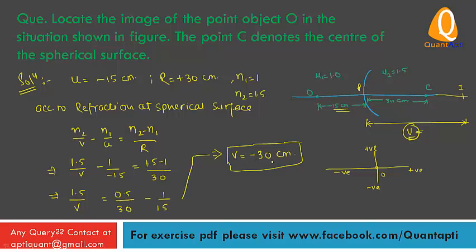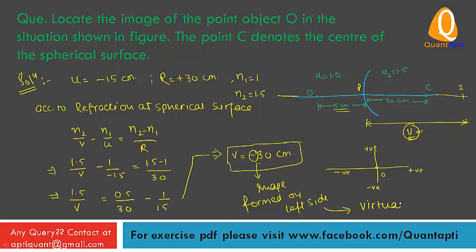V equals minus 30 centimeters means the image is formed on the left side of the spherical surface, which is on the same side as the object. The negative sign indicates the image is formed on the left side, which means the image is virtual.